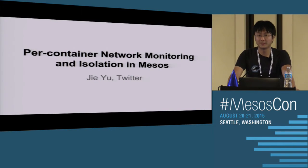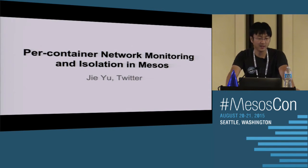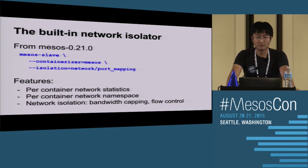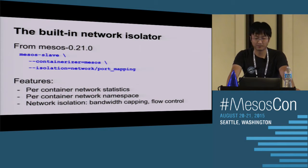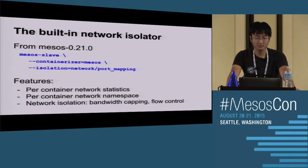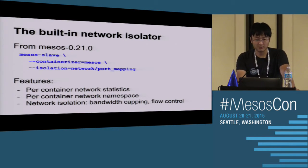My name is Ji, I'm from Twitter. Today I'm going to talk about per-container network monitoring and isolation in MESOS. I'll be discussing building a network isolator in the MESOS codebase - specifically from MESOS 0.21. We've been using this network isolator in our production environment for a few quarters, so it's very stable. You can enable it by specifying the isolation flag 'network/port_mapping'. It has features like per-container network statistics, per-container network namespace, bandwidth capping, and flow control.